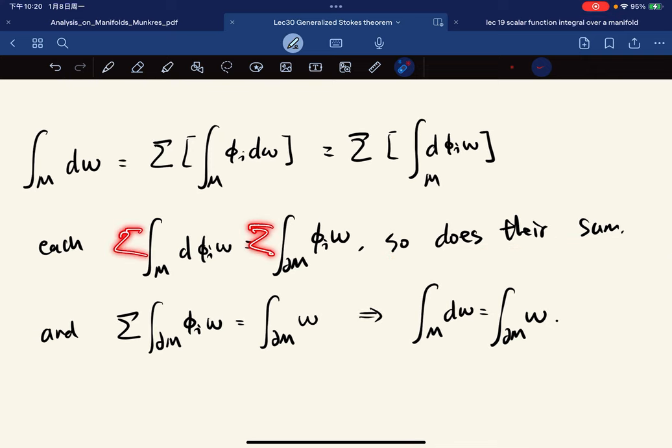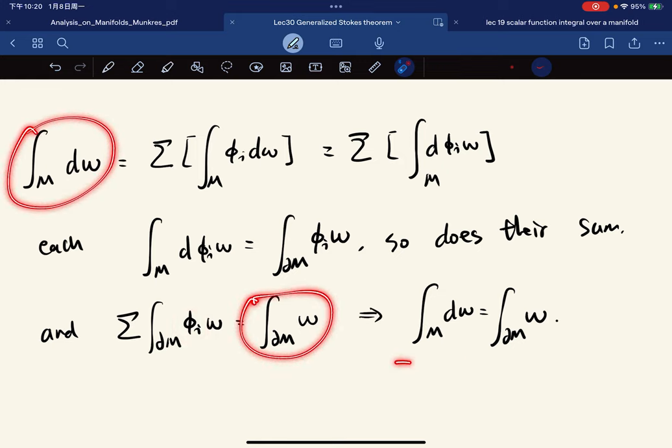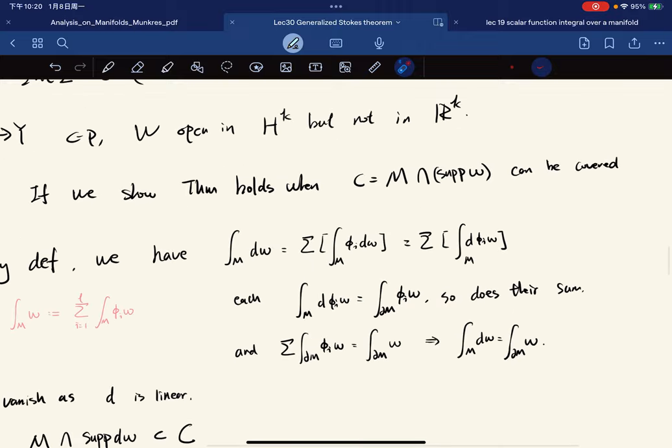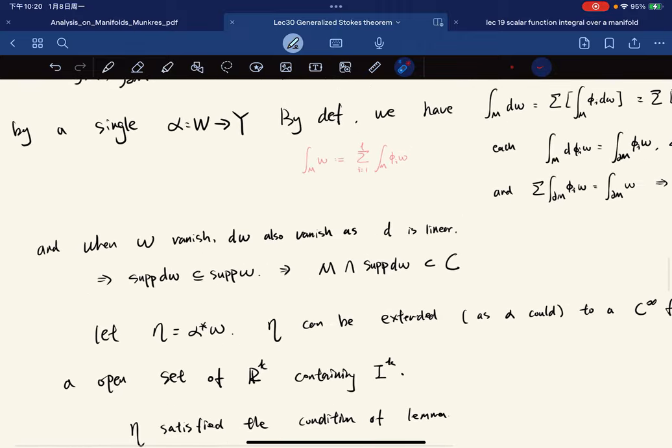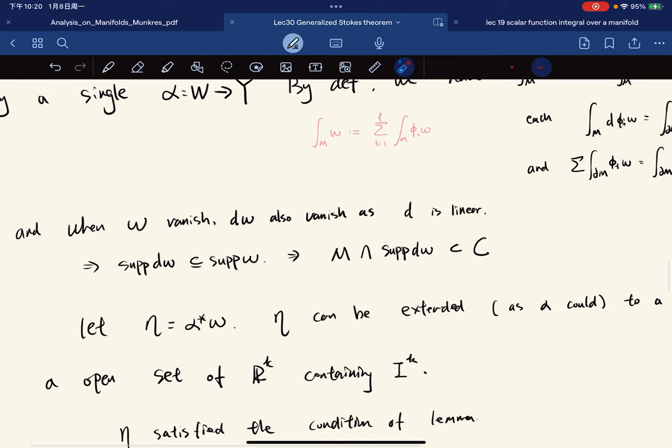We get the sum of them, sum them up, and we observe this sum. It's basically equal to this, because this is linear. And this is a partition of unity. So it turns out that this is equal to this. Okay, then we're done. So we just consider the case when C can be covered by a single coordinate patch.